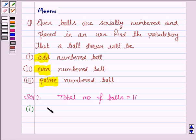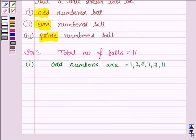So odd numbers between 1 to 11 are 1, 3, 5, 7, 9, and 11. And how many are there? 1, 2, 3, 4, 5, 6.